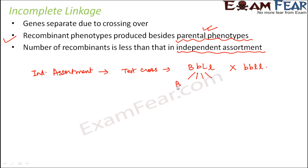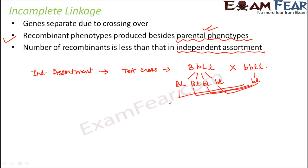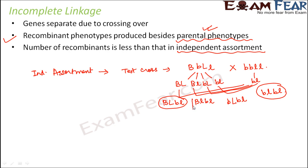As a result of this, the heterozygous parent will give four types of gametes, and the other parent gives only one type of gamete. When these combine with any of the four gametes, you get all the possible offspring.